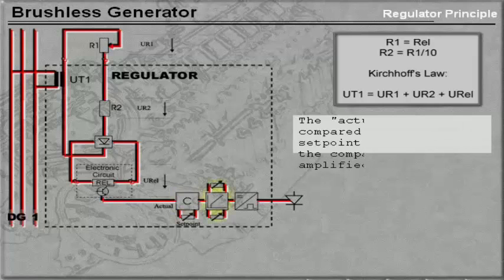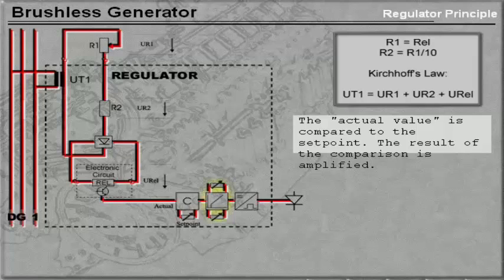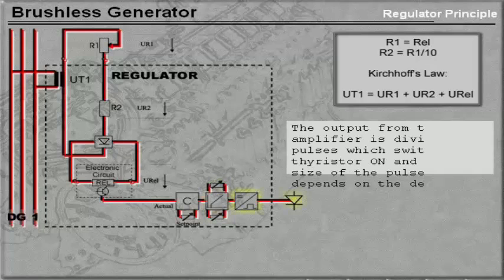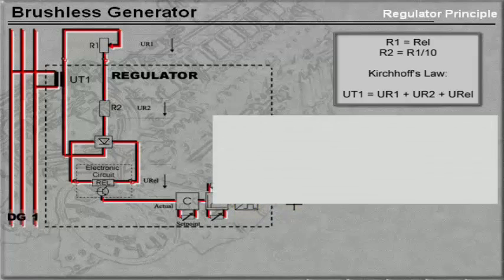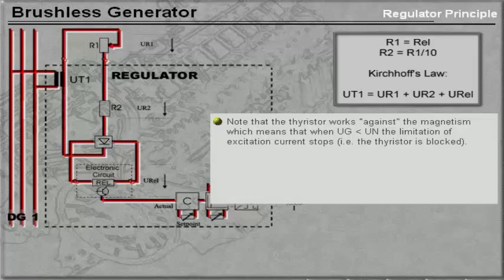The actual value is compared to the set point. The result of the comparison is amplified. The output from the amplifier is divided into pulses, which switches the thyristor on and off. The size of the pulses depends on the deviation. Note that the thyristor works against the magnetism, which means that when UG is less than UN, the limitation of excitation current stops. This means that the thyristor is blocked.